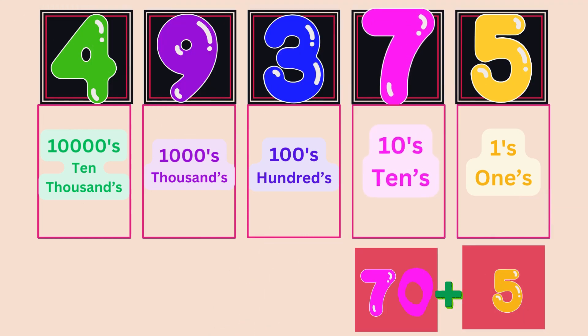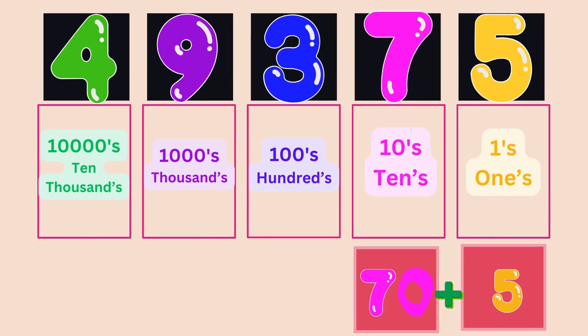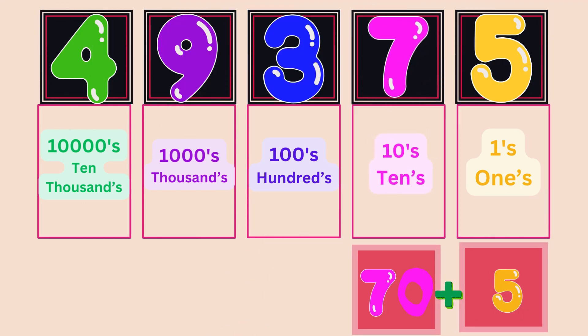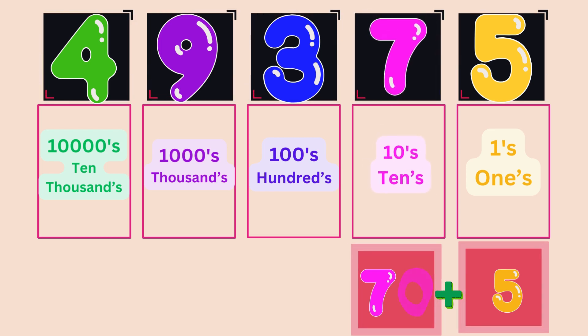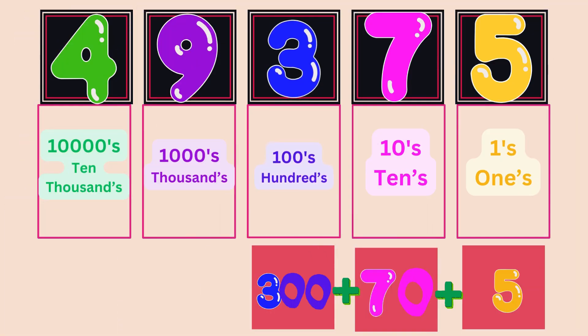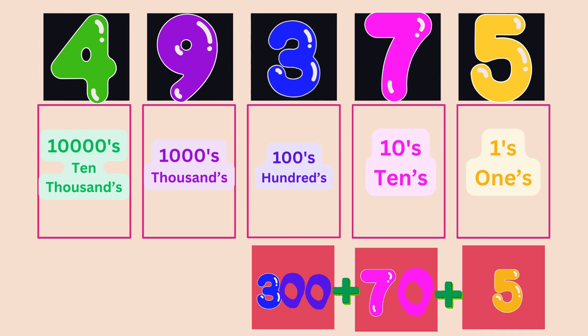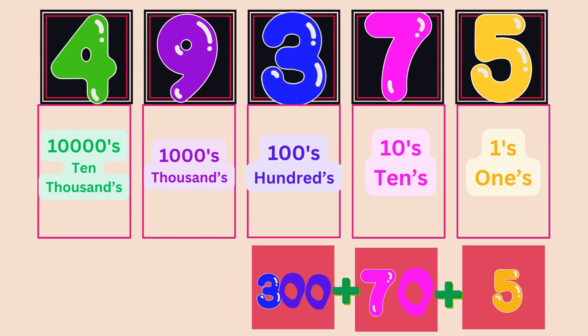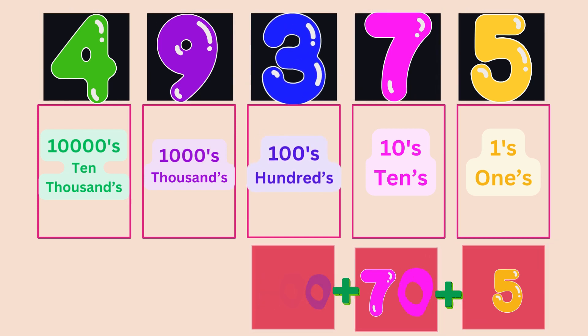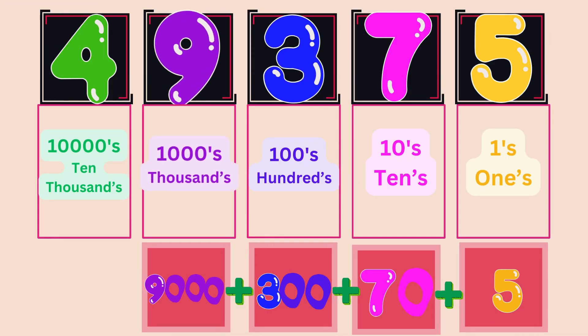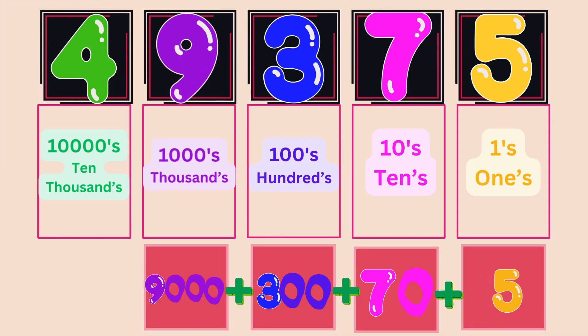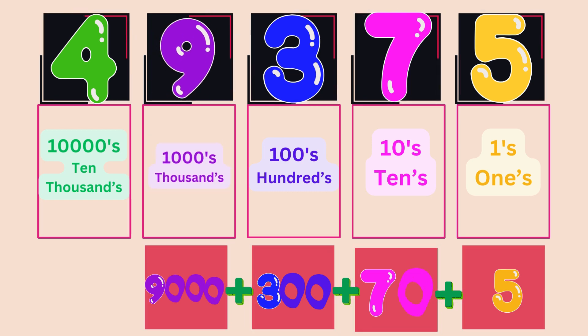The digit 7 sits in the 10s place, so it means 7 tens. 7 into 10, which is 70. The 3 sits in the 100s place, so it means 300. The 9 sits in the 1000s place, so it means 9 thousands. 9 into 1000, which is 9000.